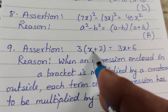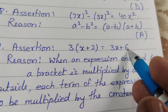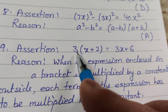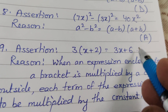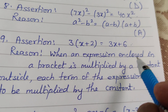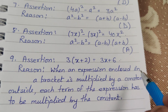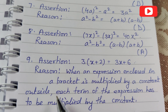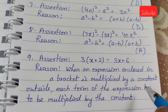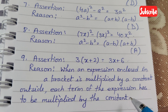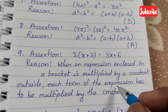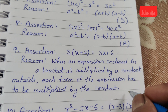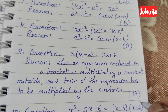Question 9 — Assertion: 3(x+2) = 3x+6. This is true: 3×x = 3x and 3×2 = 6. Reason: When an expression enclosed in brackets is multiplied by a constant outside, each term of the expression must be multiplied by that constant. This is the correct explanation, so the answer is A.